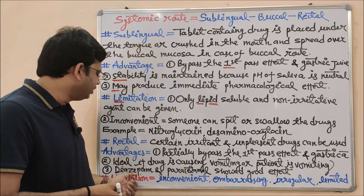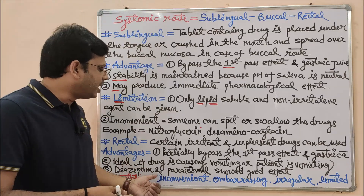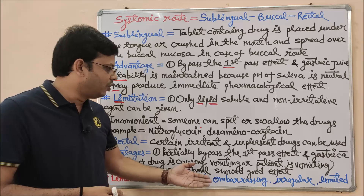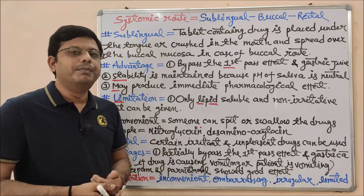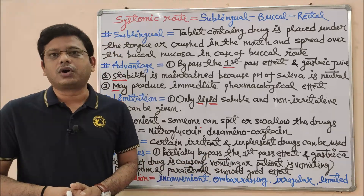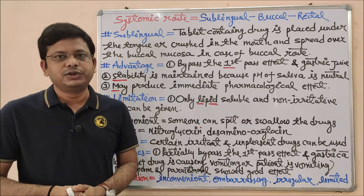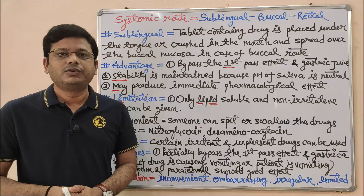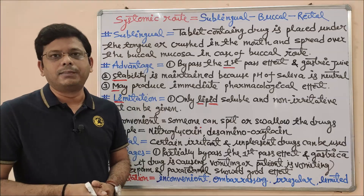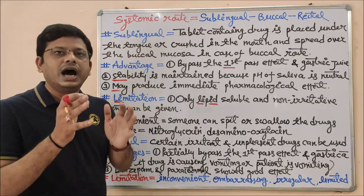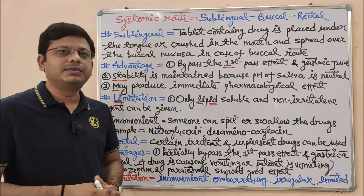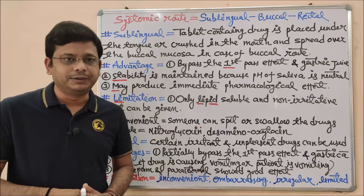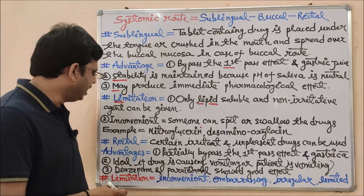Examples of drugs given via rectal route are diazepam and paracetamol, especially in the case of pediatric patients.